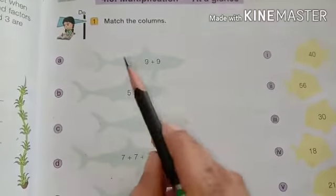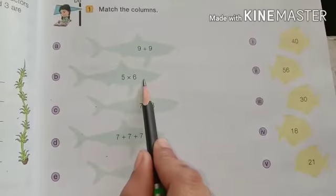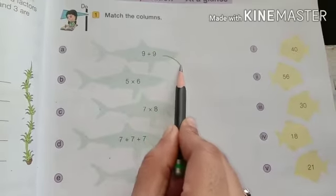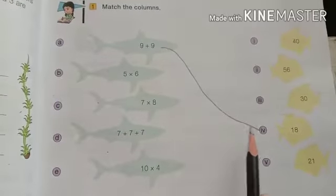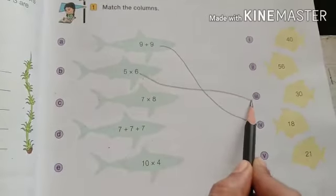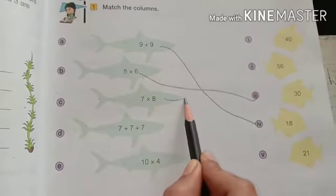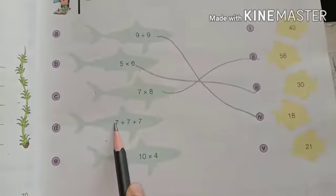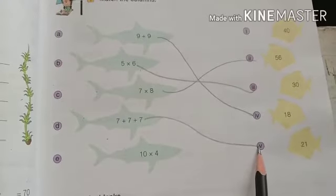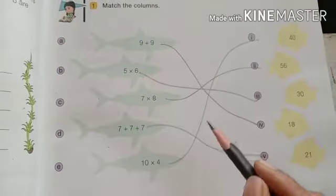Match the columns. Easy, it is 9 plus 9. Now you have to match 5 multiply with 6. Since 5 6 are, you have to do correct match. For example, 9 plus 9 is 18, 18 stands are 4, 5 6 are 30, 7 8 are 56, 7 plus 7 is 14, 14 plus 7 is 21. 10 plus 4 is 40. Like this we have to match.